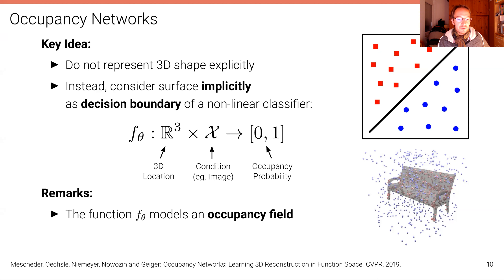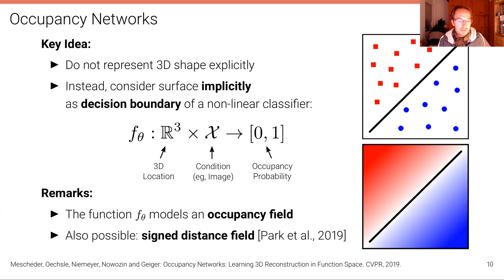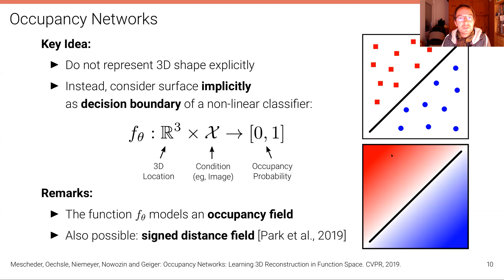This function f models an occupancy field. There are also alternatives — for example, Park et al. proposed at the same conference to use such a representation to model signed distance fields, which has the nice property that at every point in 3D space you know the distance to the model surface.